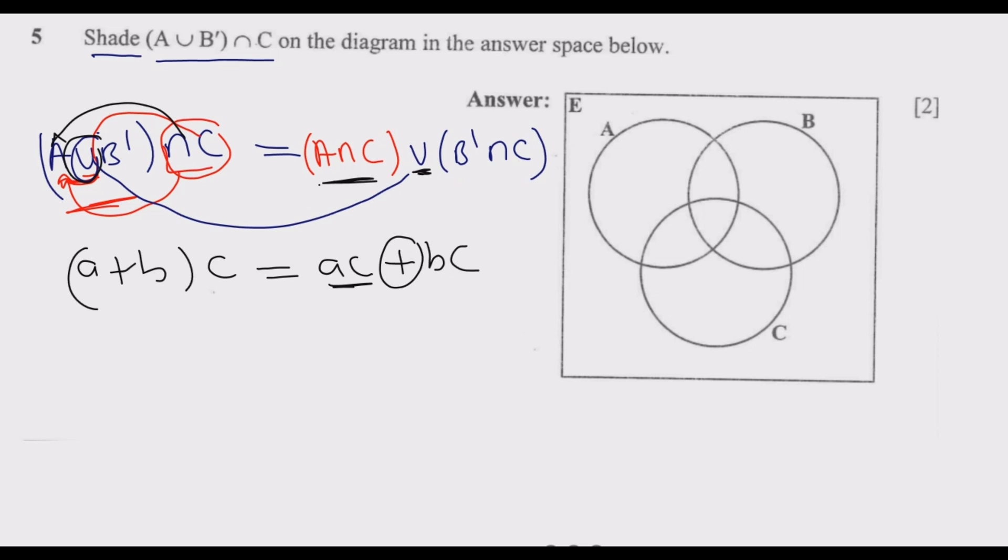So this one is the same as A intersection C, then union, B complement intersection C.